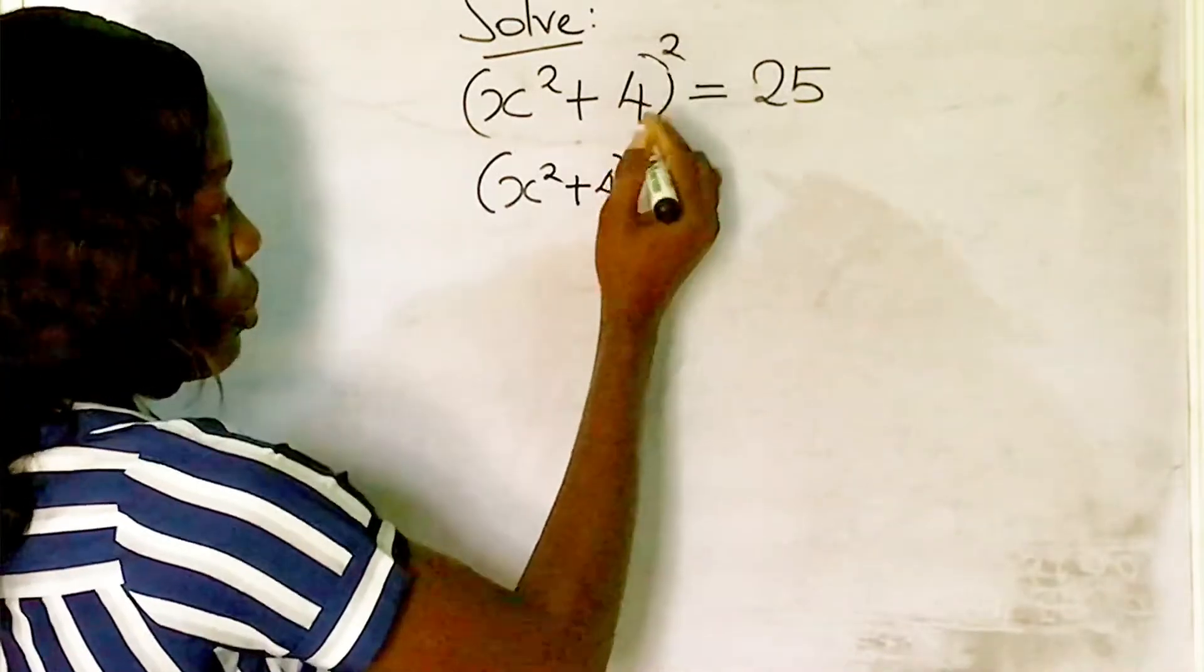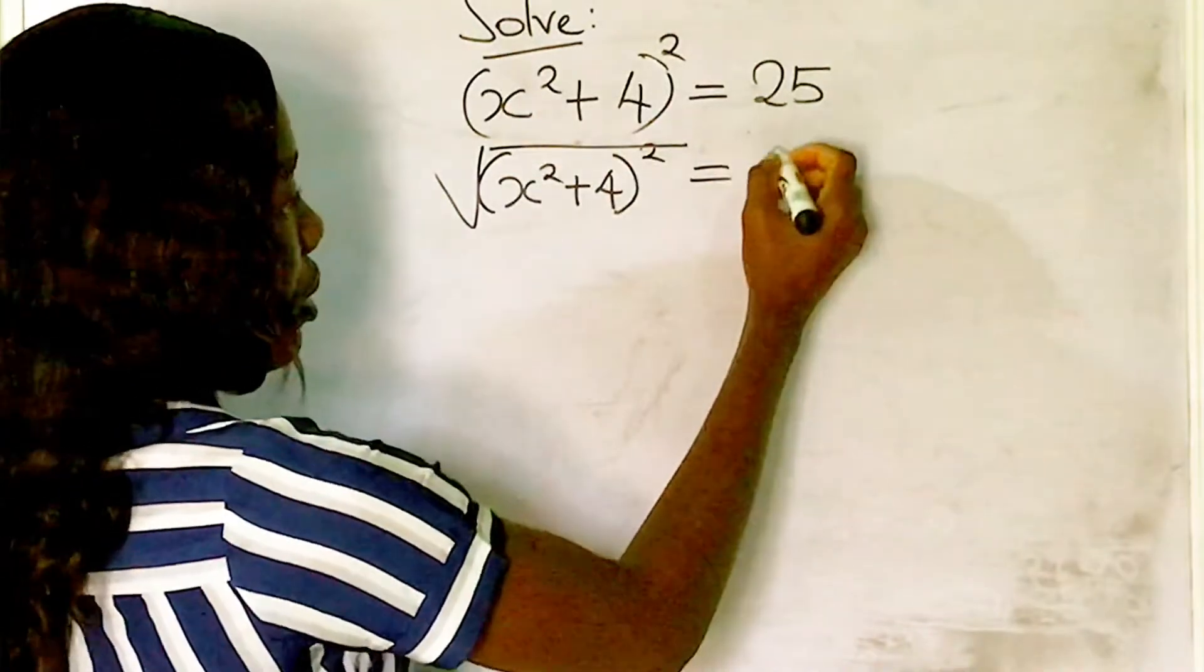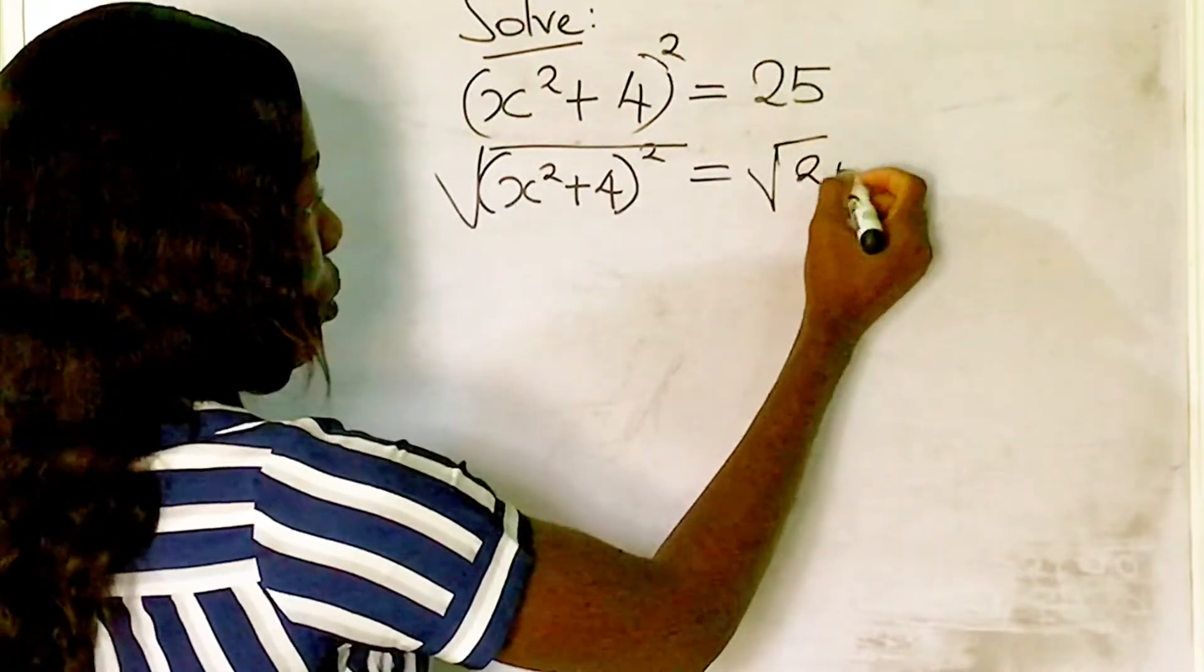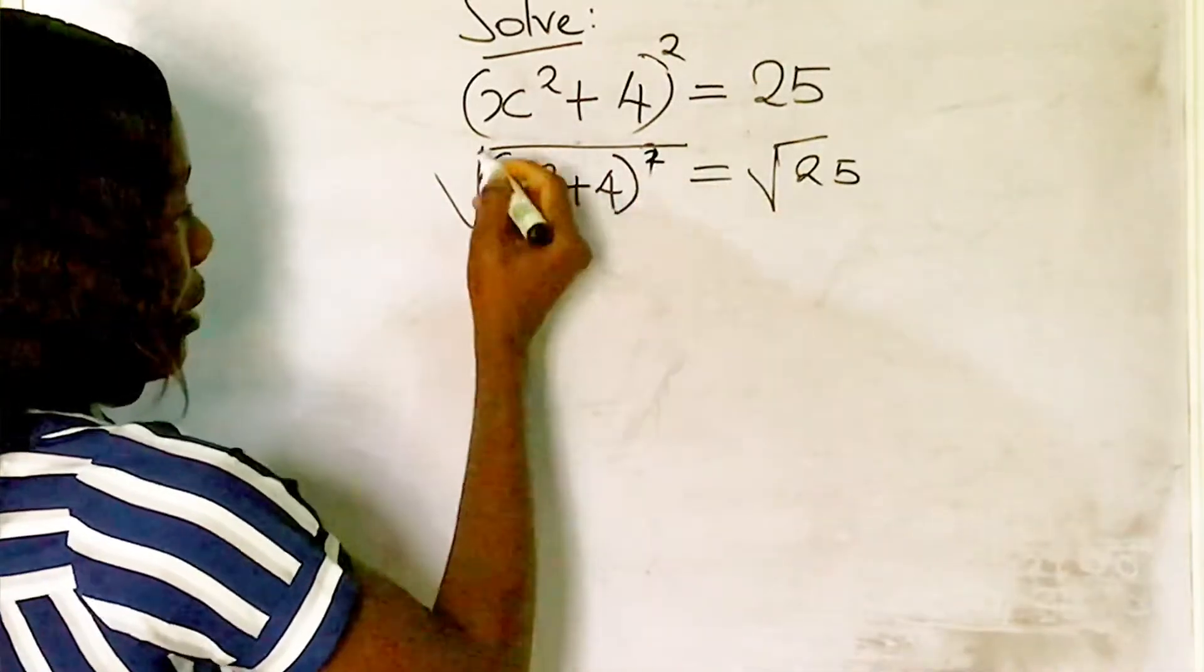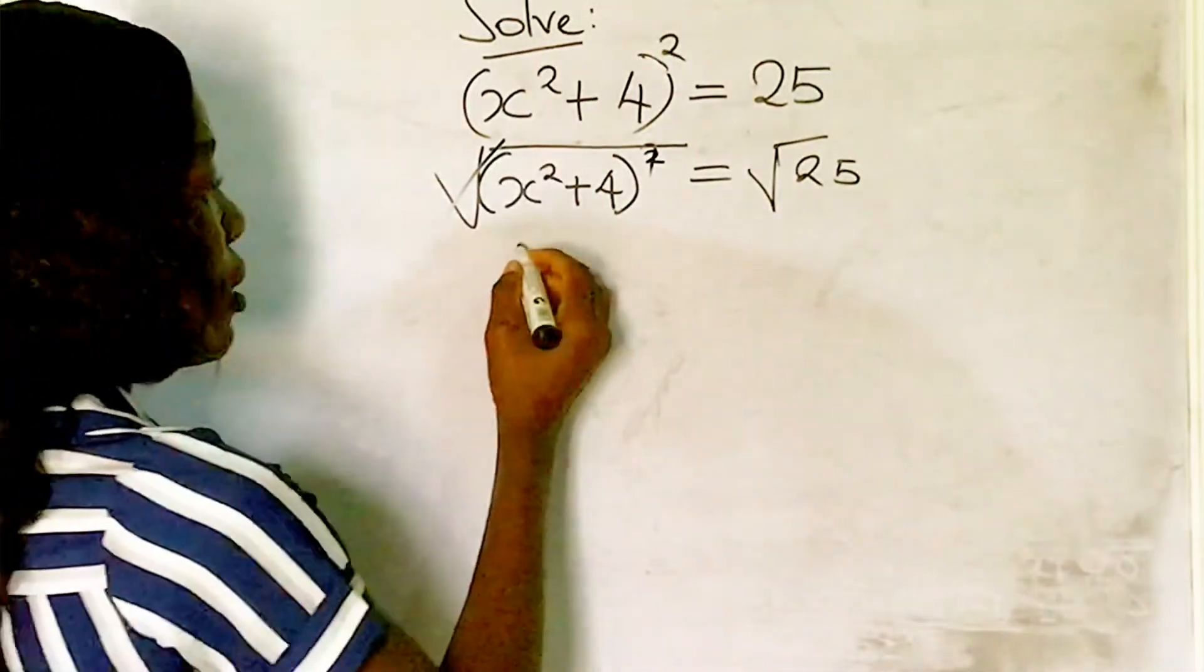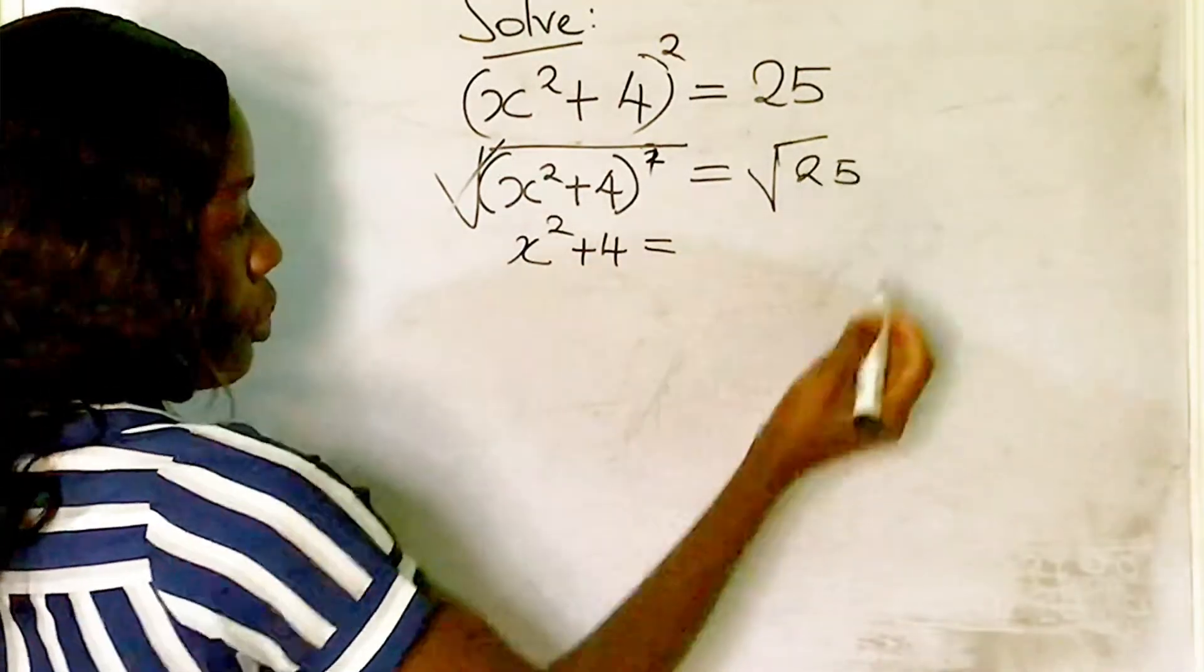To remove the square, we take the square root of both sides. The square and square root cancel each other, so we're left with x² + 4 = √25. What is the square root of 25? Five. So we have x² + 4 = ±5.